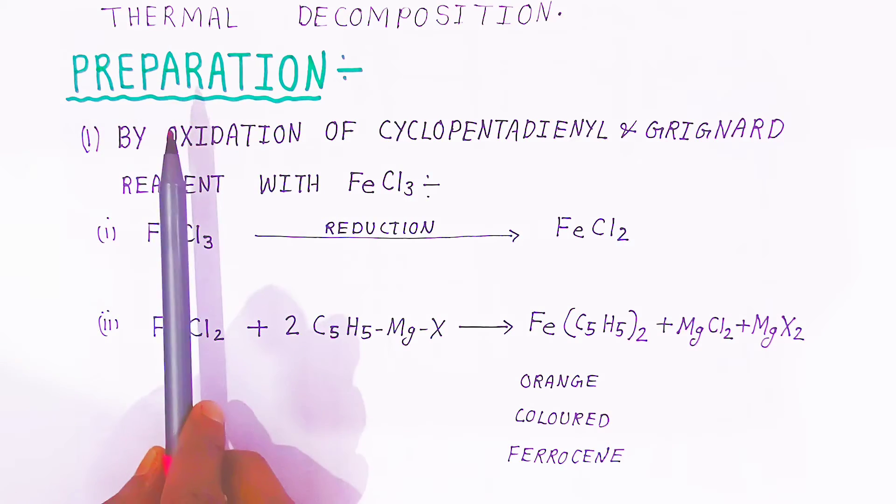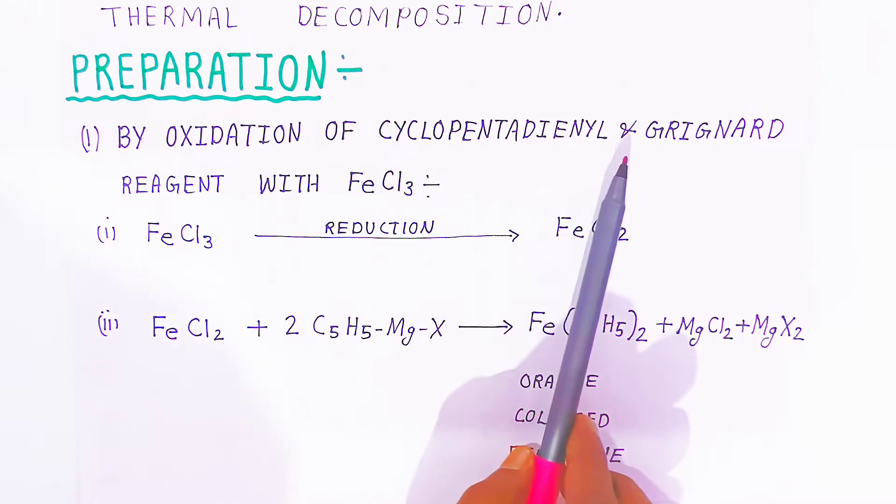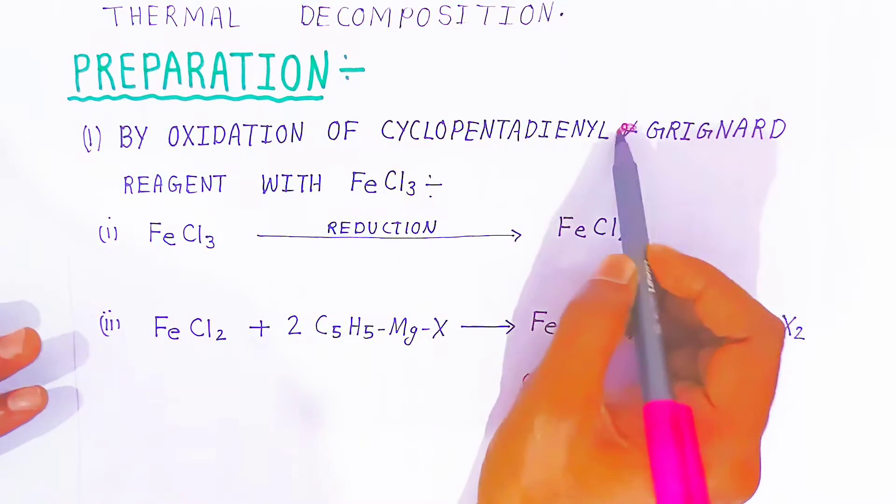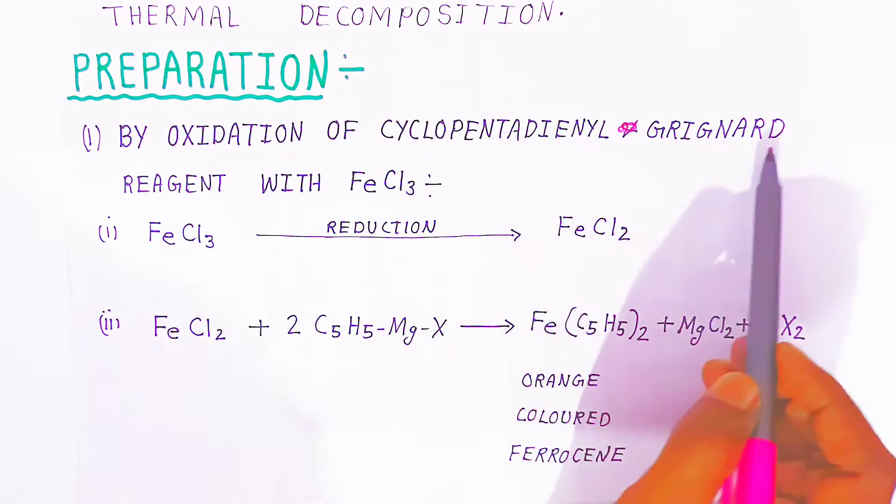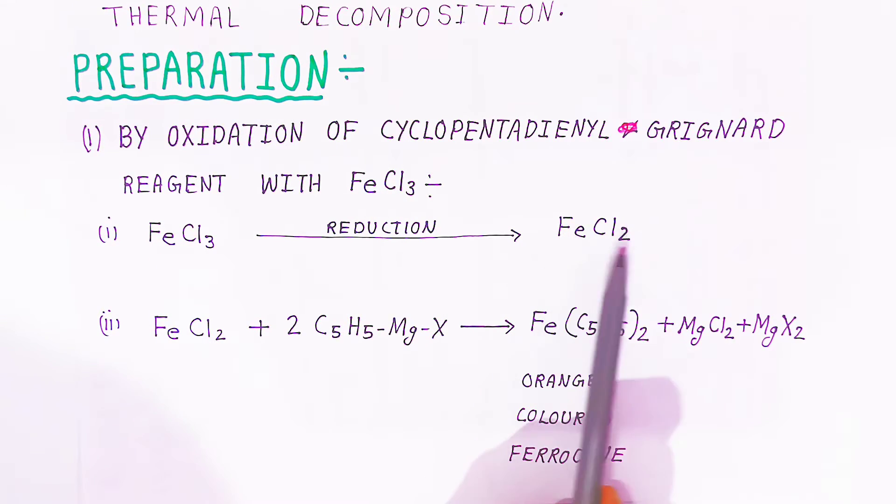First, how you are going to prepare ferrocene is by oxidation of cyclopentadienyl Grignard reagent with FeCl3. FeCl3 is reduced to FeCl2.